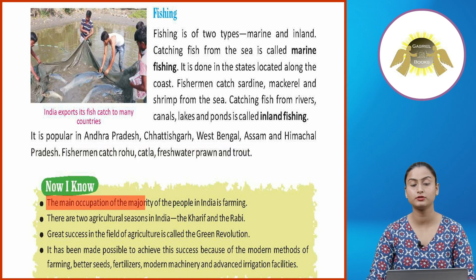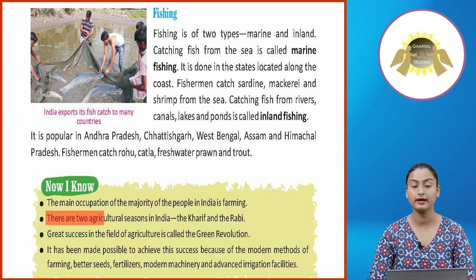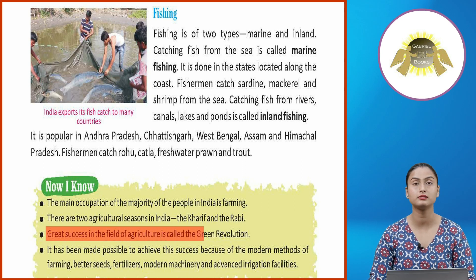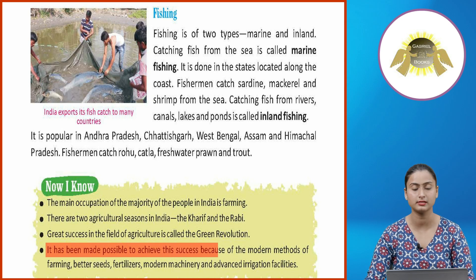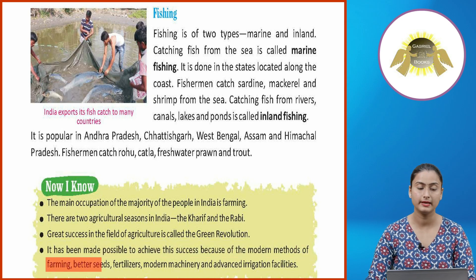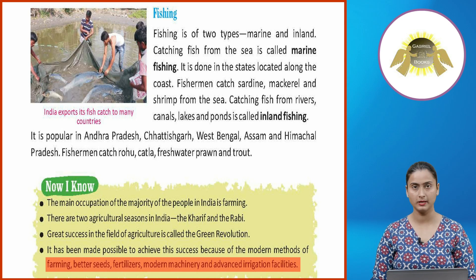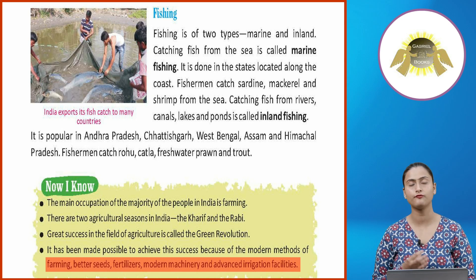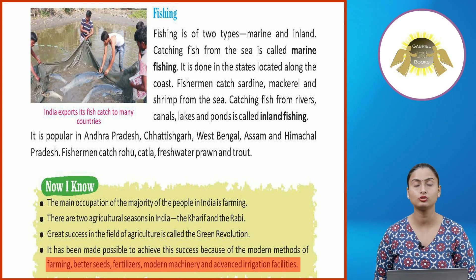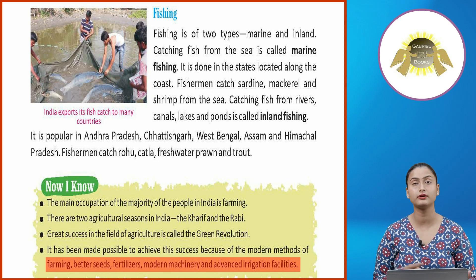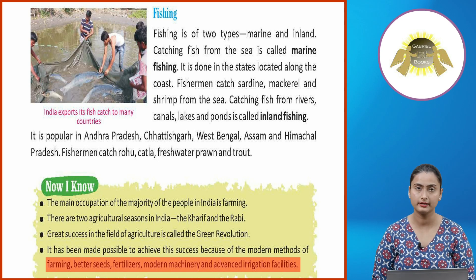To summarize — the main occupation of the majority of people in India is farming. There are two agricultural seasons: the Kharif and the Rabi. Great success in agriculture is called the Green Revolution, made possible through modern farming methods, better seeds, fertilizers, modern machinery and advanced irrigation facilities. We also covered livestock, fishing, Operation Flood, and the White Revolution. With this we come to the end of this chapter.